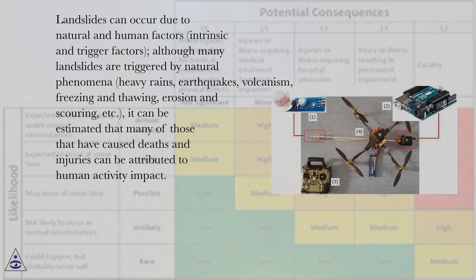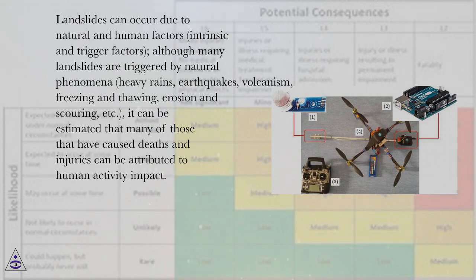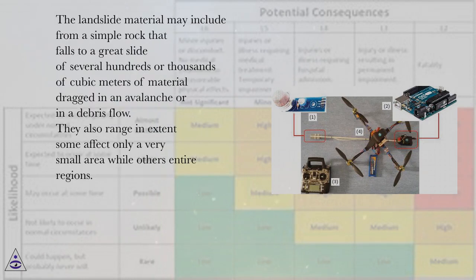Landslides can occur due to natural and human factors — intrinsic and trigger factors. Although many landslides are triggered by natural phenomena such as heavy rains, earthquakes, volcanism, freezing and thawing, and erosion and scouring, many that have caused deaths and injuries can be attributed to human activity impact. The landslide material may range from a simple falling rock to a great slide of several hundreds or thousands of cubic meters of material dragged in an avalanche or debris flow.